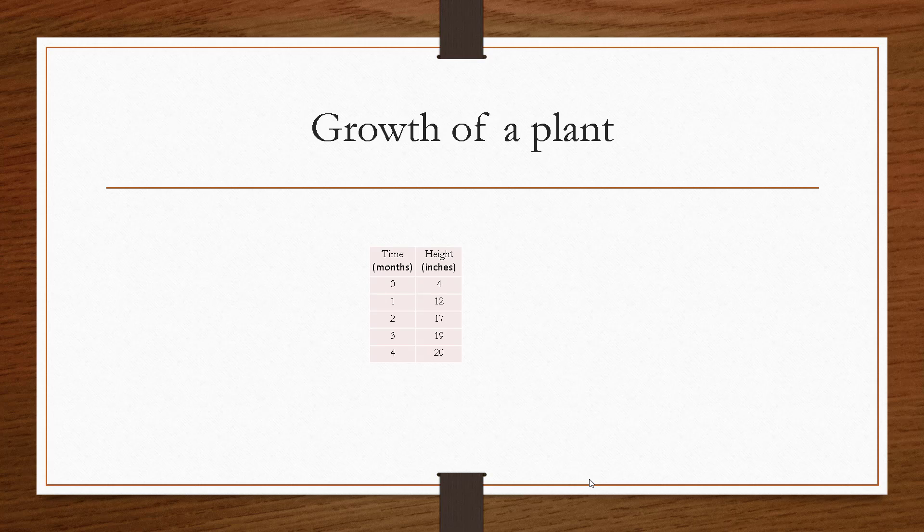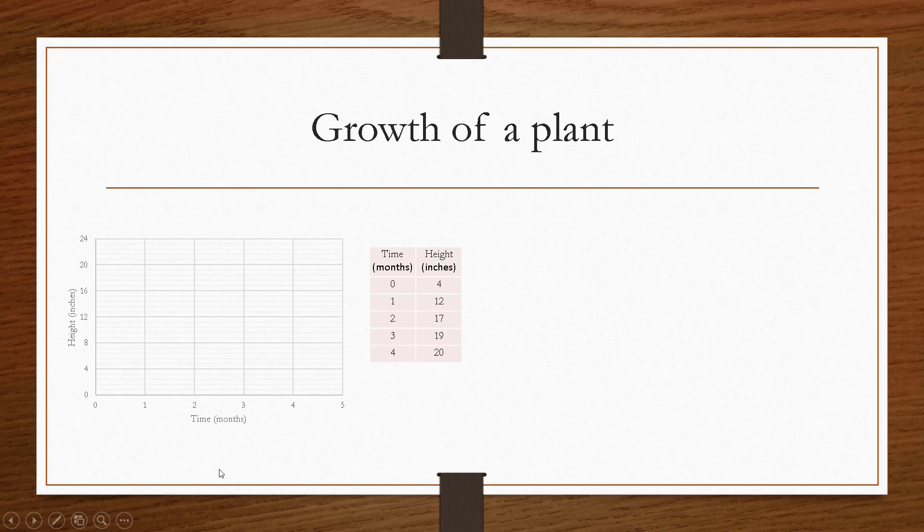We could also look at this graphically. So we can do this by plotting points. We'll have time on the x-axis and height in inches on the y-axis, and we'll just plot point by point. Now we could draw a curve connecting these dots, and I would expect this to be somewhat of a smooth curve and continuous because a plant doesn't all of a sudden just jump up several inches. It's going to be a continuous type growth.